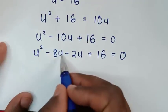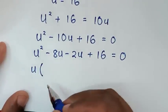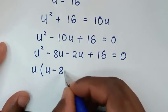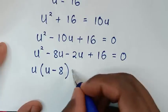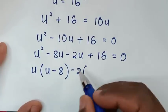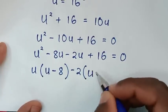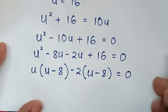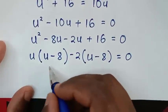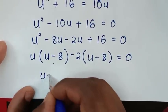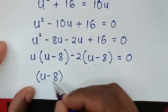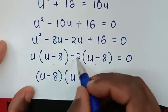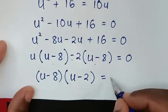Then from here, u is taken out of the first two terms: u(u minus 8), and then negative 2 is factored out of the last two terms: negative 2(u minus 8). So this gives (u minus 8)(u minus 2) equals 0.